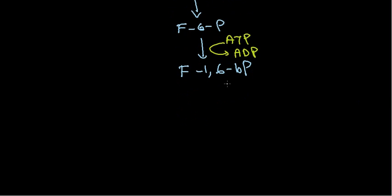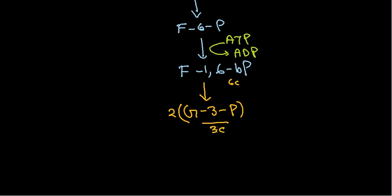Once fructose-1,6-bisphosphate is produced, it is split into two glyceraldehyde-3-phosphate (G3P) molecules. Fructose-1,6-bisphosphate is a six-carbon molecule and it produces two three-carbon G3P molecules — two times three carbons equals six carbons total. Keeping track of carbon numbers is very important when following biochemical pathways.